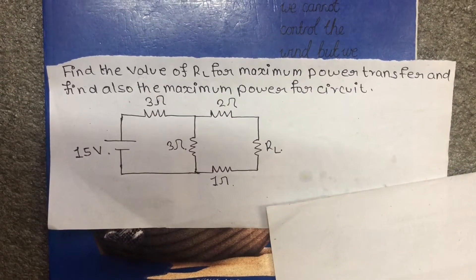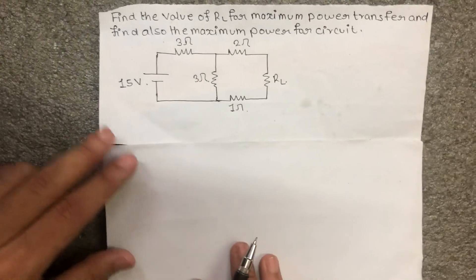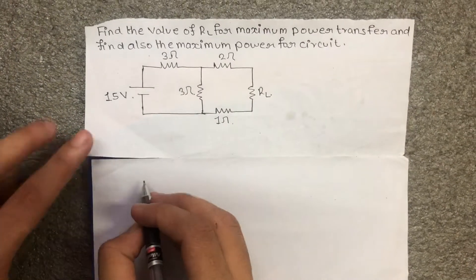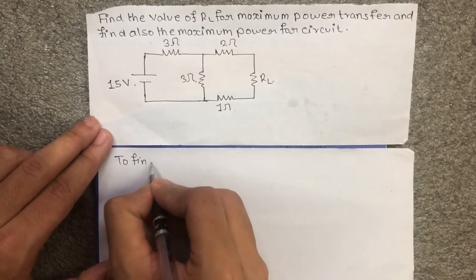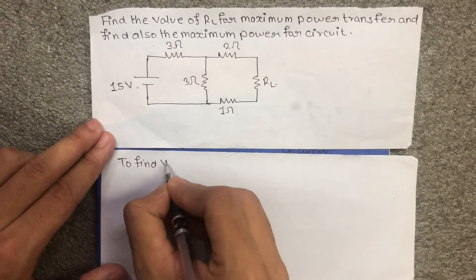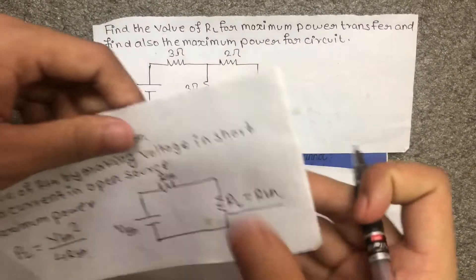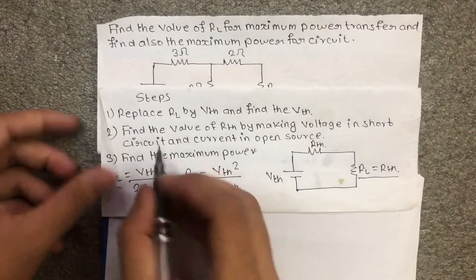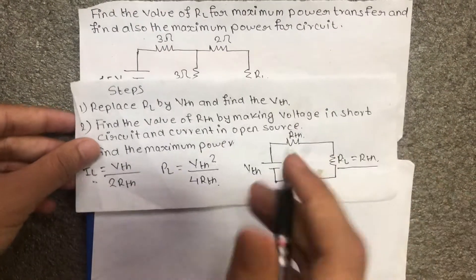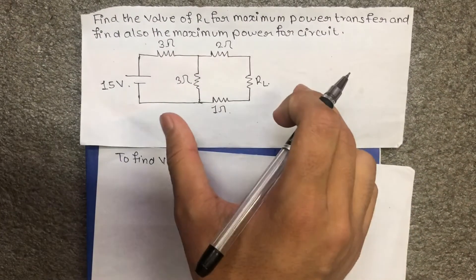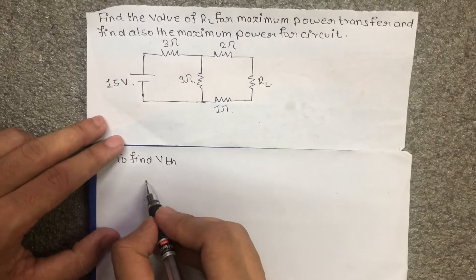The first step is to find Vth and Rth. To do this, we replace RL by open circuit terminals and find Rth. We then convert and find the Thevenin equivalent.